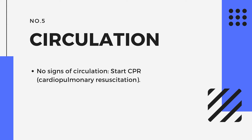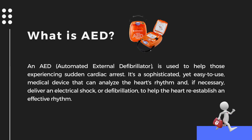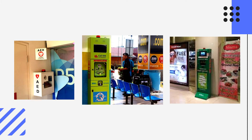Step 5: Circulation. If the victim shows no sign of circulation, start CPR. Before doing CPR, ask someone to call 999 and search for an AED. What is AED? An automated external defibrillator is used to help those experiencing sudden cardiac arrest. It's a sophisticated yet easy-to-use medical device that can analyze the heart rhythm and, if necessary, deliver an electrical shock or defibrillation to help the heart re-establish an effective rhythm.